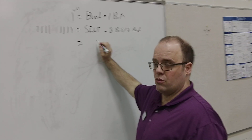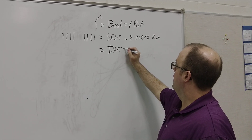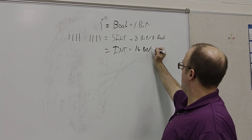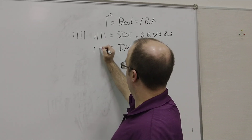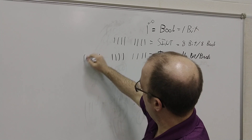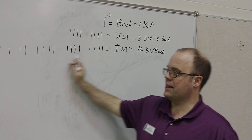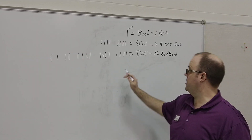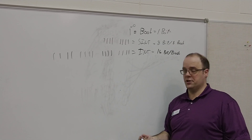The next level up will be an INT, or integer. This is 16 bits, or bools. It's going to look like 16 places of 1s and 0s — it could be all 0s or some combination. I'm using 1s because it's much easier to draw than a 0.